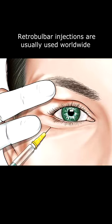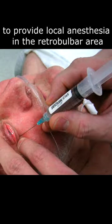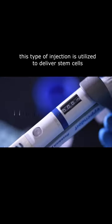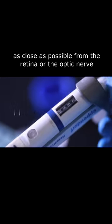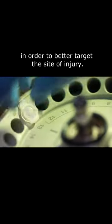Retrobulbar injections are usually used worldwide to provide local anesthesia in the retrobulbar area behind the globe of the eye. During stem cell treatment, this type of injection is utilized to deliver stem cells as close as possible to the retina or the optic nerve in order to better target the site of injury.